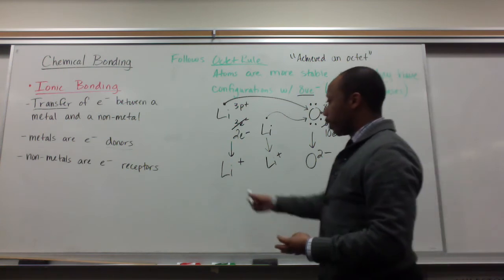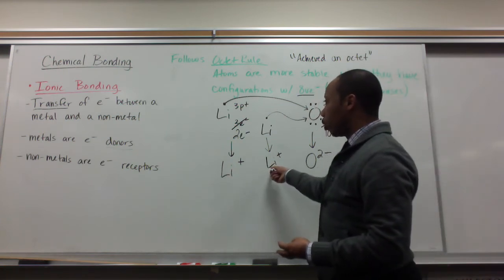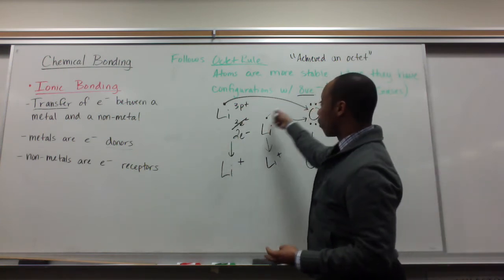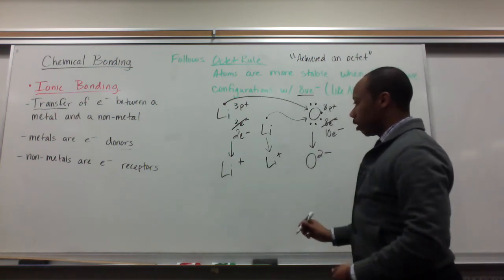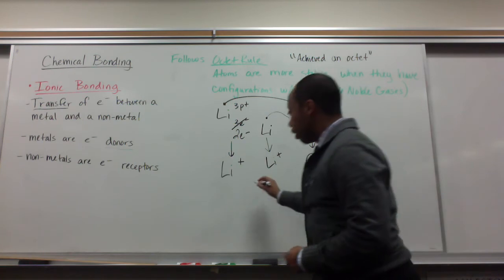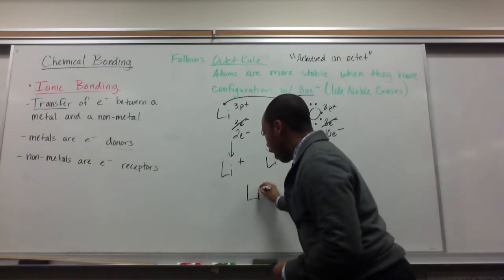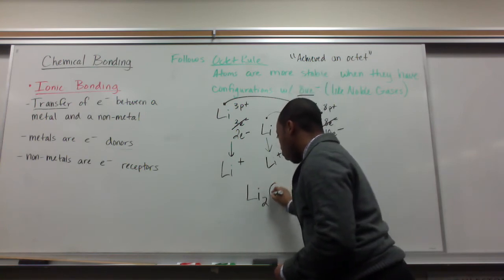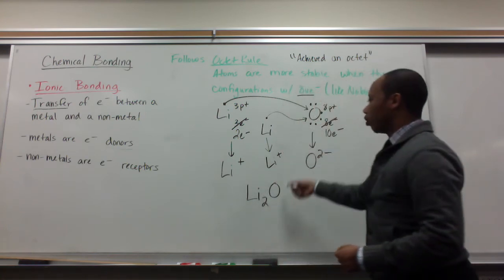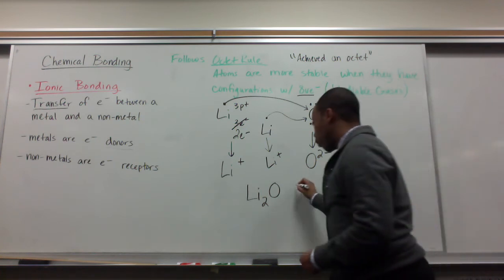So when I'm explaining this or trying to figure out what chemical formula they make or what ratio they react in, you can say there are two lithium ions or two lithium atoms for every one oxygen in order for it to achieve its octet. So how I write that is Li2, meaning two lithium atoms for every one oxygen. This would be known as the chemical formula.